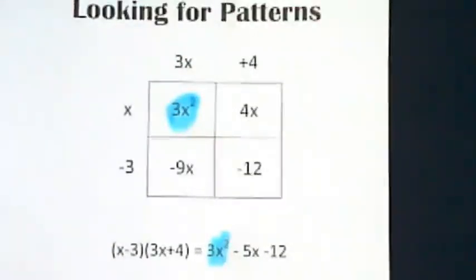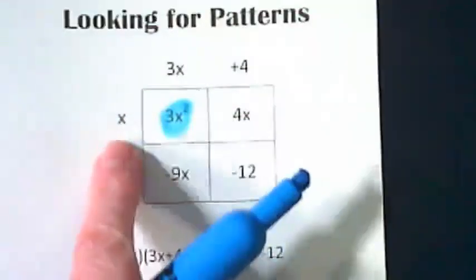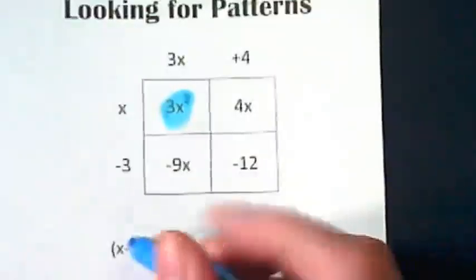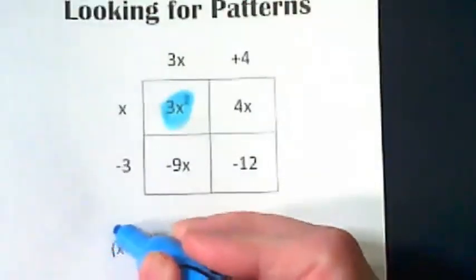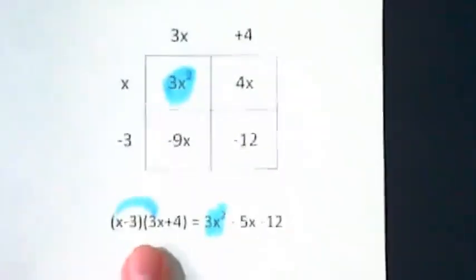And I think it's pretty obvious when we look at the box where that 3x squared came from because the boxes are labeled. But let's use the idea of FOIL and show with the color where 3x squared comes from down here with these binomials.